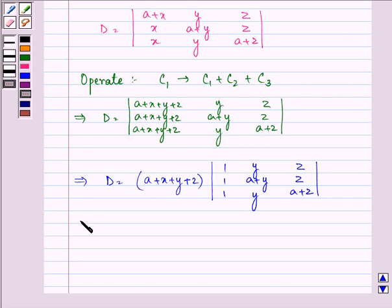Now in row 1 let us subtract row 2 from row 1. On doing so we have D equal to a plus x plus y plus z